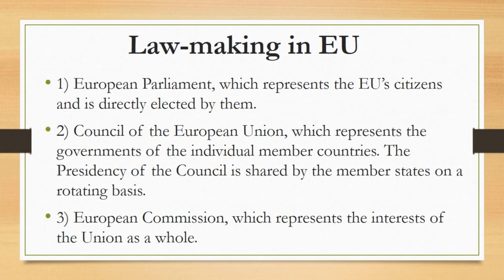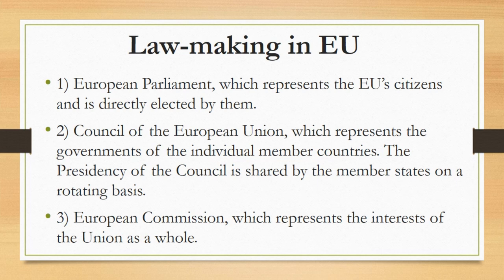Lawmaking in the European Union: There are three main institutions involved in EU legislation. First is the European Parliament, which represents the EU's citizens and is directly elected by them. Second is the Council of the European Union, which represents the governments of the individual member countries, with the presidency shared among member states on a rotating basis. Third is the European Commission, which represents the interests of the European Union as a whole.